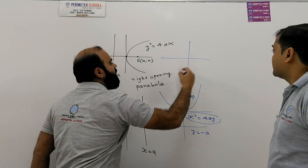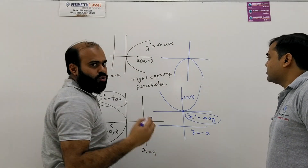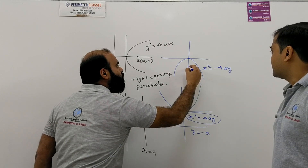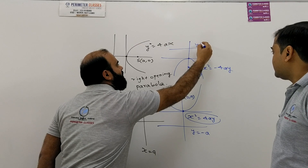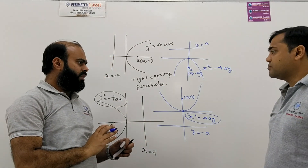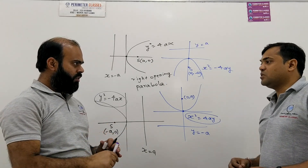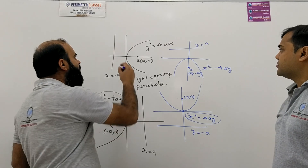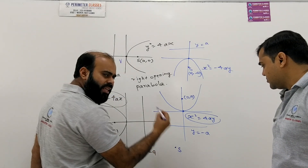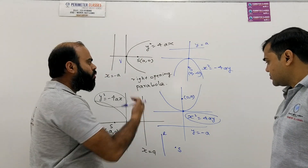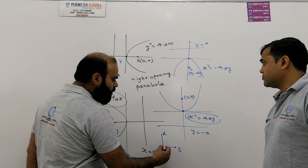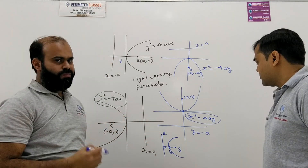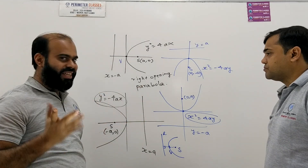Lastly, the downward-opening parabola has equation x² = −4ay, with focus at (0, −a) and directrix y = a. These are the four standard cases when the parabola passes through the origin — that is, when the vertex is at the origin. The vertex is defined as the midpoint of the perpendicular drawn from the focus to the directrix.